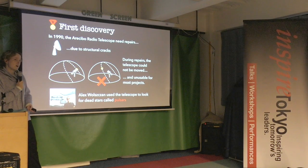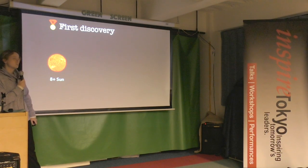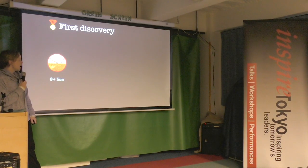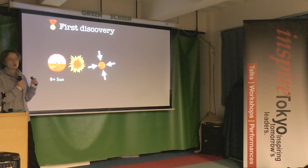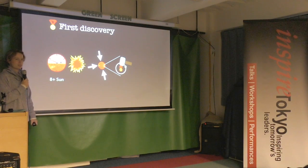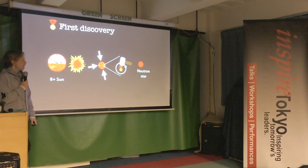Alex was looking for a type of dead star called a pulsar. When you have a star more than eight times the mass of the Sun, it eventually runs out of fuel — burning hydrogen, helium, and carbon — and these heavy stars explode in something called a supernova. The end result is a tiny core that collapses rapidly and becomes so incredibly dense that atoms start to break apart, leaving almost exclusively neutrons. We call this a neutron star.